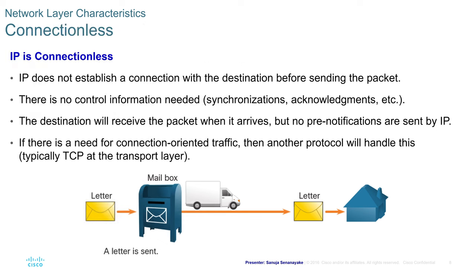IP is connectionless — it does not establish a connection with the destination before sending the packet. There is no control information needed such as synchronizations or acknowledgements. The destination receives the packet when it arrives, but no pre-notification is sent by IP. If connection-oriented traffic is needed, another protocol such as TCP at the transport layer will handle this.